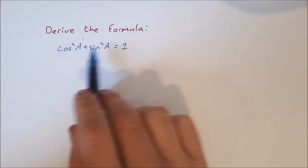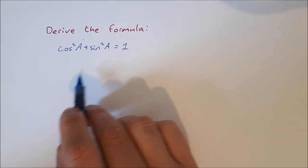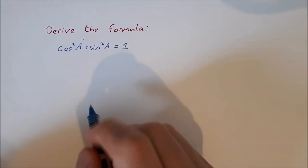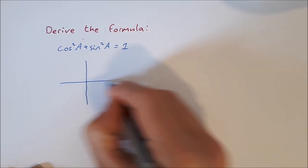You're asked to derive the formula cos²a + sin²a = 1. For this one, we draw a sketch of the unit circle.